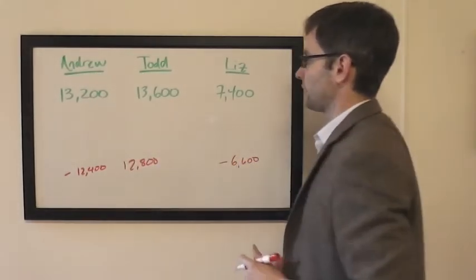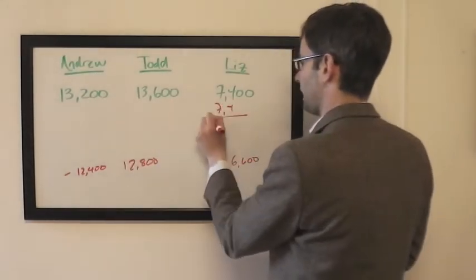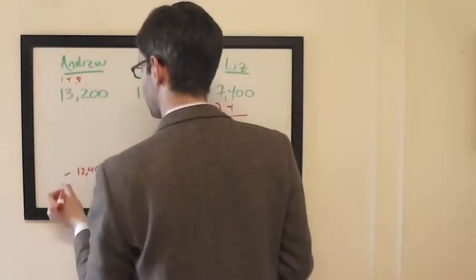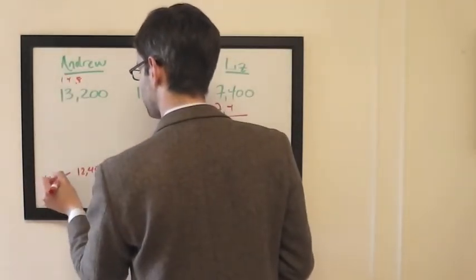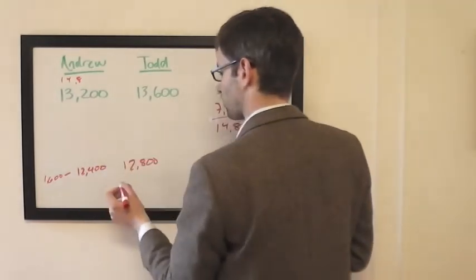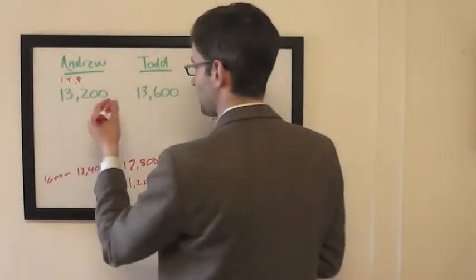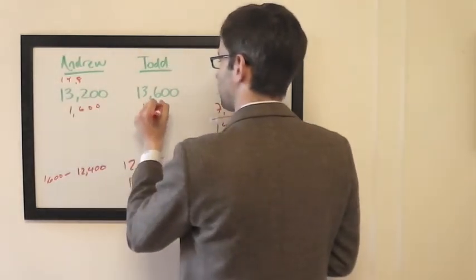All right, looking at Liz doubling up, she'll have 14,800. So to cover that, Andrew has to wager 1,600 and Todd has to wager 1,200. Of course, I don't really like that wager, but we'll see.